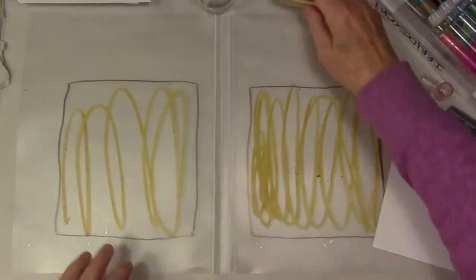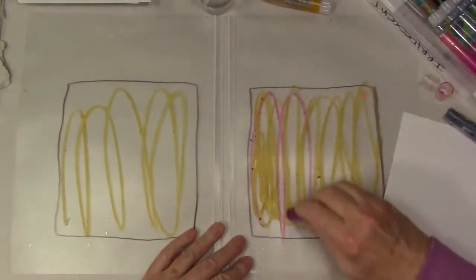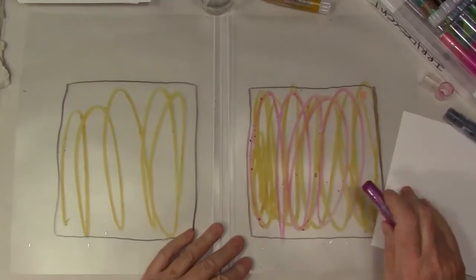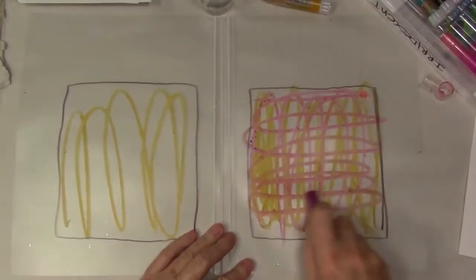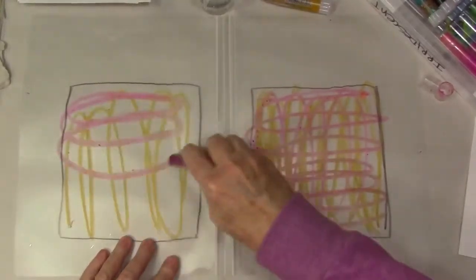Now I'm just going to start coloring that area in with lots of beautiful colors of gelatos. I believe these might be the iridescent set. It really doesn't matter.